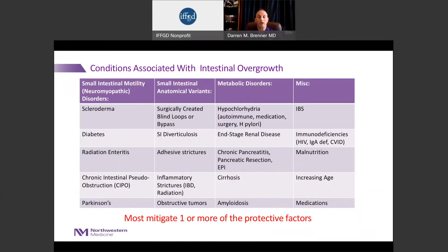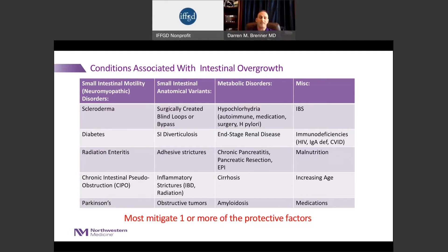The likelihood of intestinal overgrowth increases if we lose one or more of these protective factors. If gut motility doesn't work — as in patients with diabetes, scleroderma, or Parkinson's — we may be at increased risk of bacterial overgrowth. If we reduce stomach acid, bile salts, or pancreatic enzymes, this may also lead to overgrowth. Surgical changes to anatomy, such as Crohn's patients who have their ileocecal valve resected, increases the likelihood bacteria can move from colon to small intestine. Autoimmune disorders or conditions like HIV/AIDS, where immune cells can't fight organisms, are just a few reasons why people can develop intestinal overgrowth.